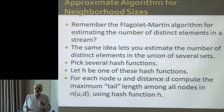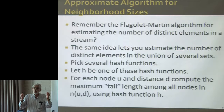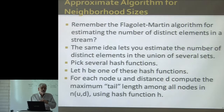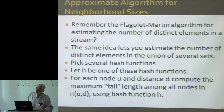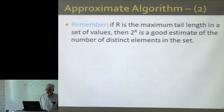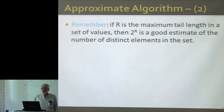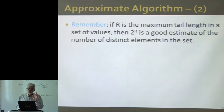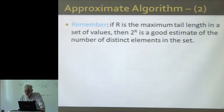You don't have to worry about eliminating duplicates. Each member of one or more of those neighborhoods contributes its tail length toward computing the maximum — exactly like in the stream case, where it doesn't matter how many times the same element appears in the stream, because it's always contributing the same tail to finding the maximum. What do you actually hash? Each node has a name or a number, and you hash it. The maximum tail length — capital R — we use 2^R as the estimate of the size of a set, and that's one out of, say, a hundred hash functions.